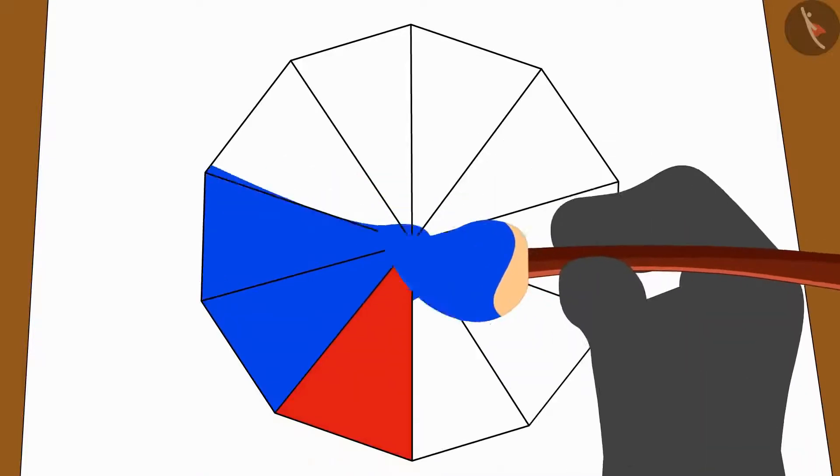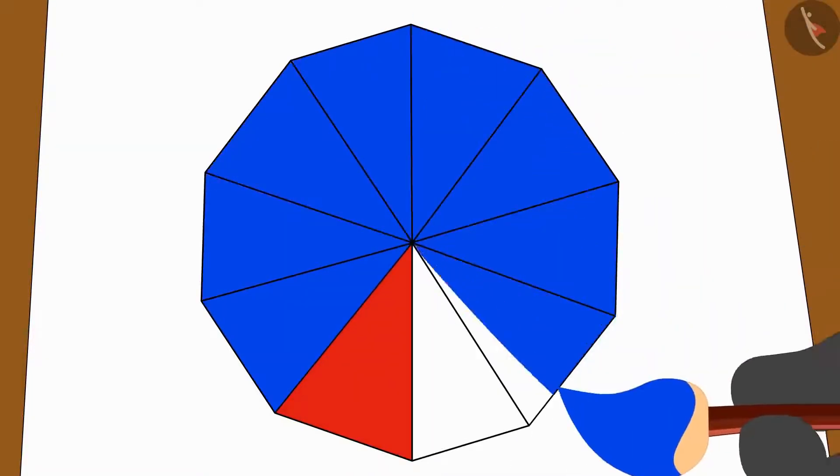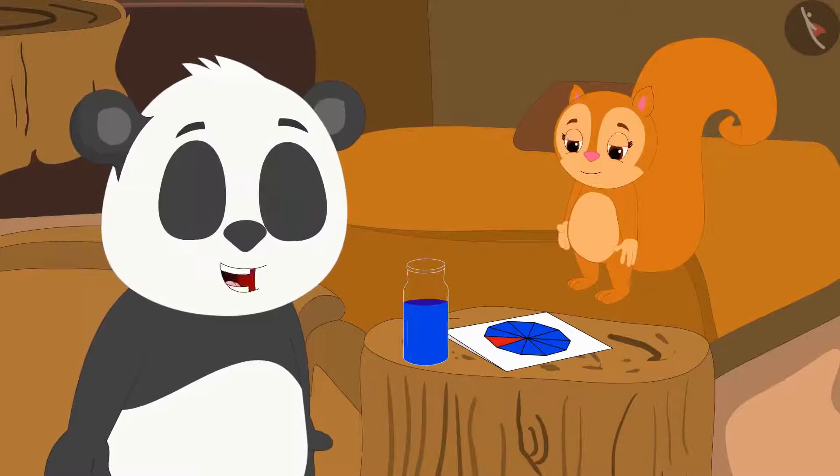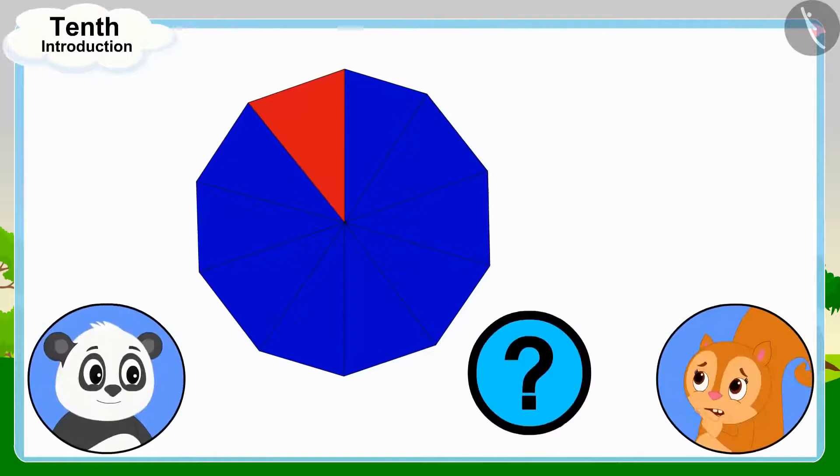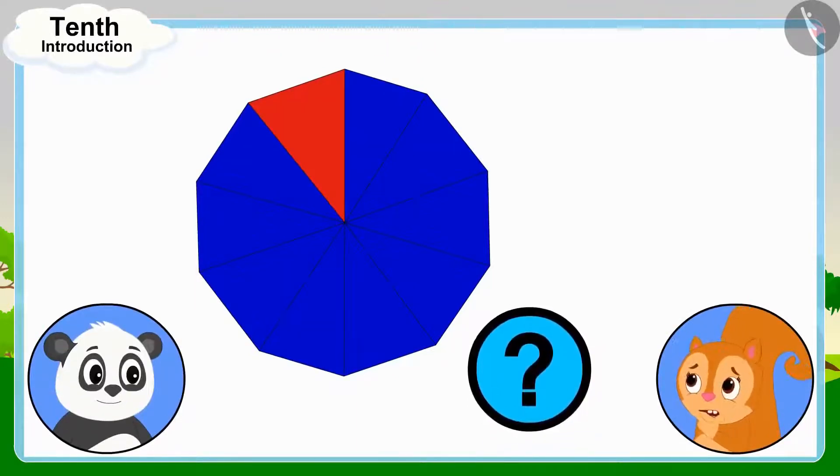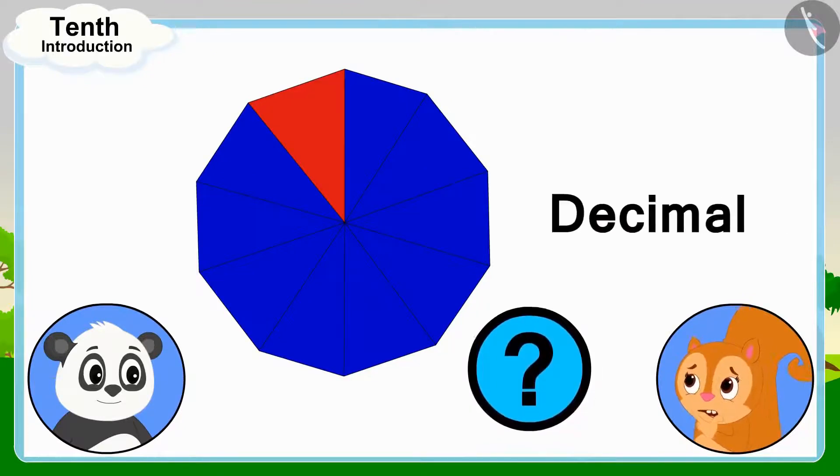Golu immediately brought the blue color bottle and began to color the rest of the flower. Chanda, I have colored the remaining nine parts. Chanda is wondering how she can write the parts filled by Golu using decimal.